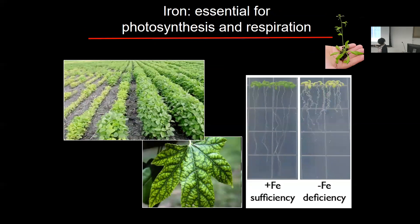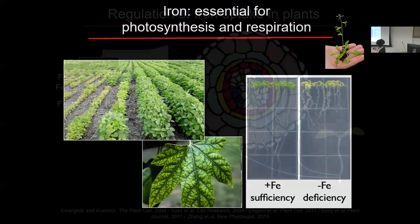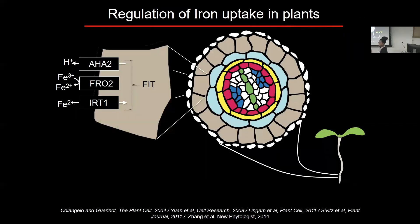Iron is essential for many processes, including both photosynthesis and respiration, where iron is involved in heme complexes and iron-sulfur complexes for these processes. In response to iron deficiency, plants — depending upon what type we're talking about — can undergo two different mechanisms: the strategy one response and the strategy two response.